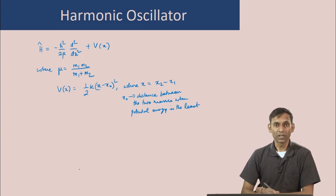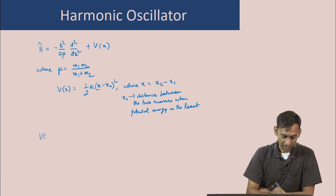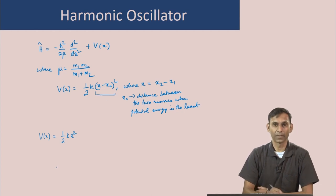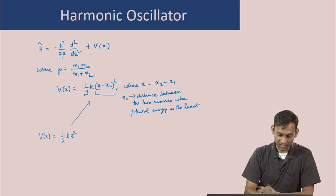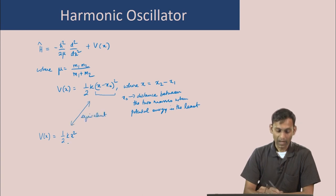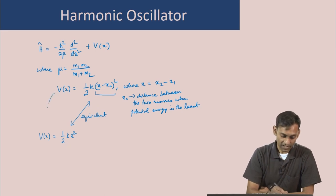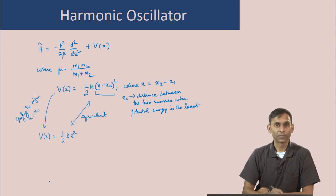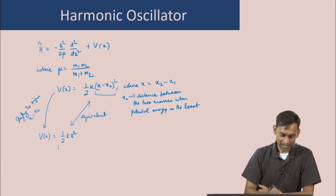We note that the harmonic oscillator potential V(x) = (1/2)·k·x² and V(x) = (1/2)·k·(x − x₀)² are actually equivalent: by shifting the origin to x = x₀, the displacement (x − x₀) becomes the new coordinate, and we recover the standard form (1/2)·k·x².